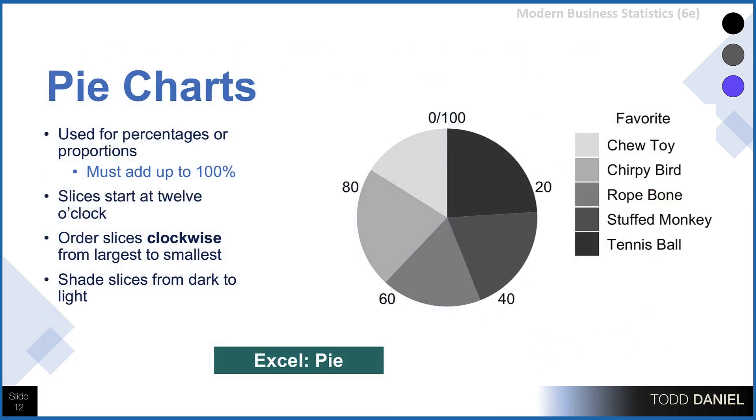Now pie charts are another option, although not a very good one. I recommend against using them, but if you do, you must use data like percentages or proportions that can add up to 100%. Start the slices at 12 o'clock, order them clockwise from largest to smallest, and shade them from dark to light. In Excel, you can use the pie chart option to create a pie graph.